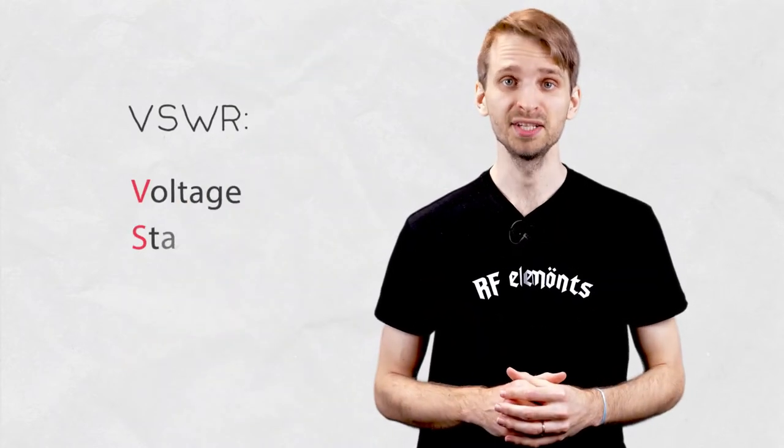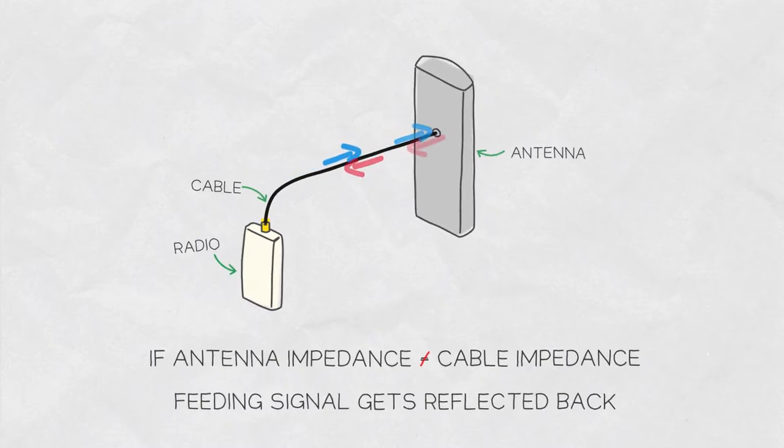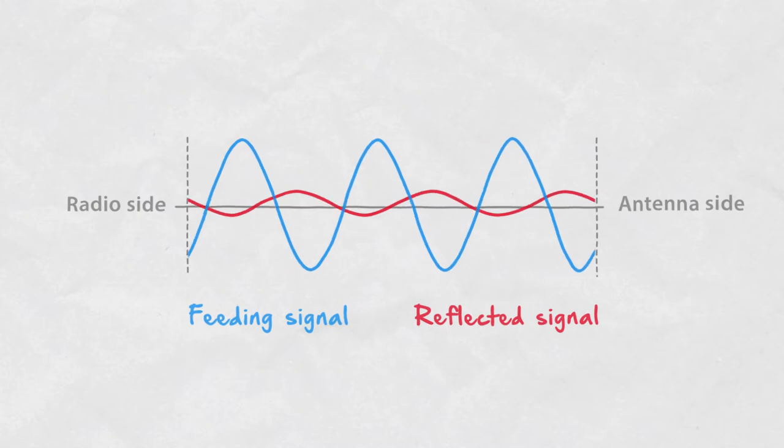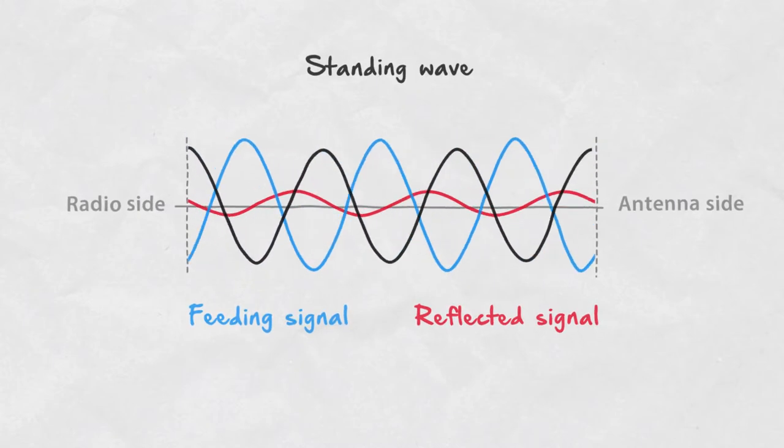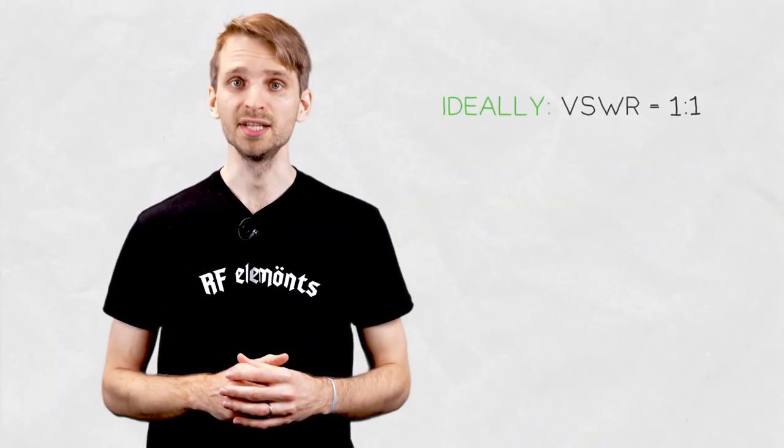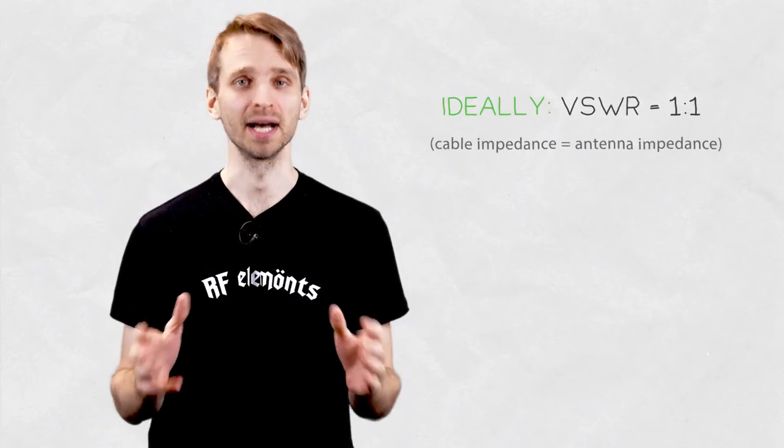VSWR stands for voltage standing wave ratio. If the impedance of an antenna and the cable are different, part of the feeding signal is reflected back. The reflected signal adds up with the feeding signal into a single wave called a standing wave. The ratio of maximum and minimum value of the standing wave is VSWR. Ideally VSWR is 1 to 1, which means the impedance of the antenna and the cable are exactly equal.